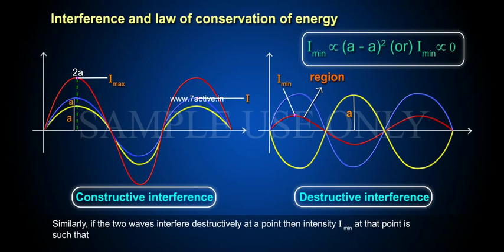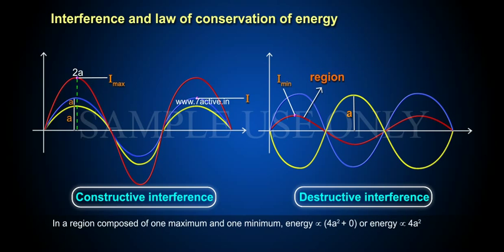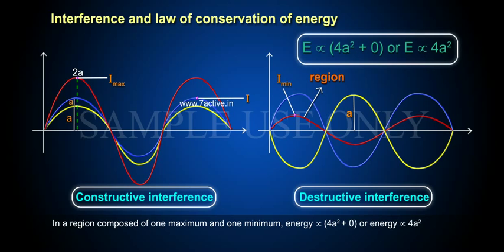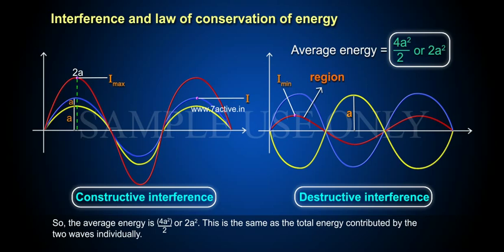In a region composed of one maximum and one minimum, energy is directly proportional to 4A squared plus 0, or energy is directly proportional to 4A squared. So the average energy is 4A squared divided by 2, or 2A squared.